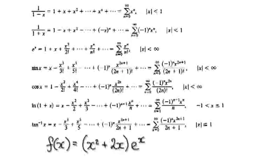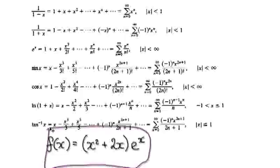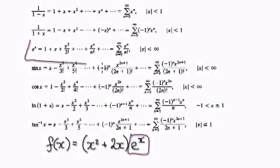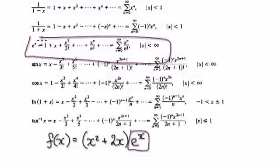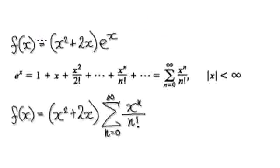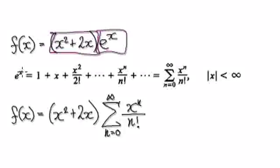Okay, let's give you guys some more practice. Find the Maclaurin series for this function. Press pause and have a go. To do this, we are going to make use of this. Looking at the function, you've got one block multiplying another block.